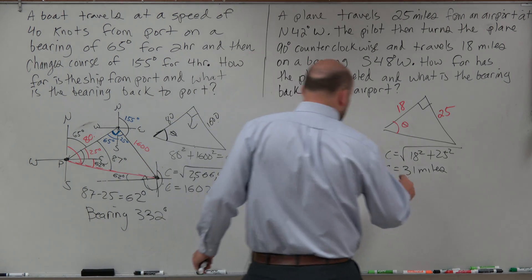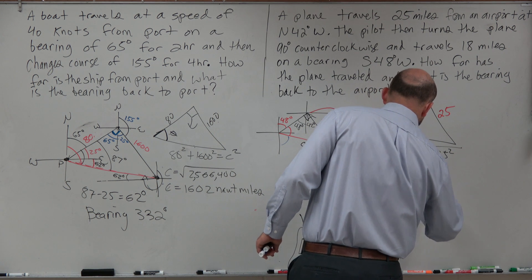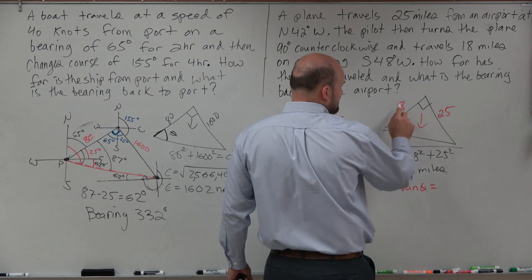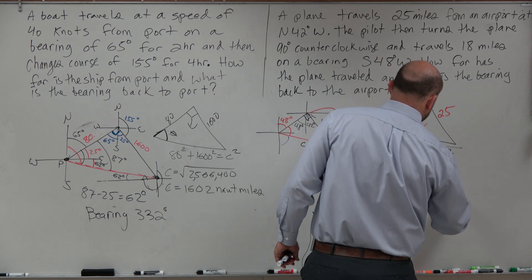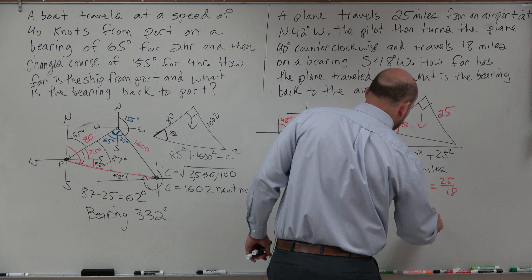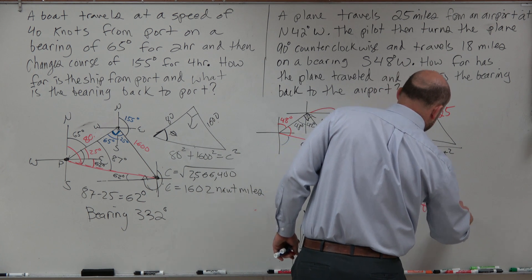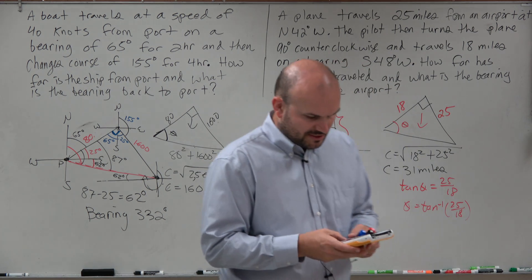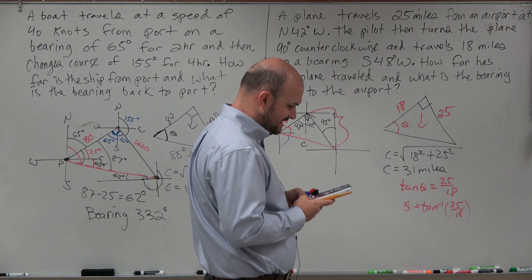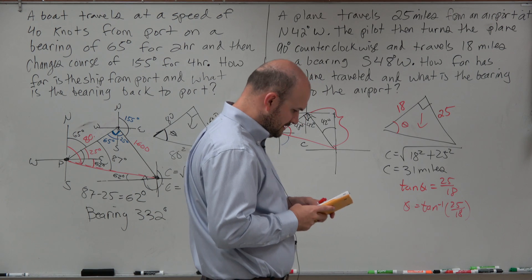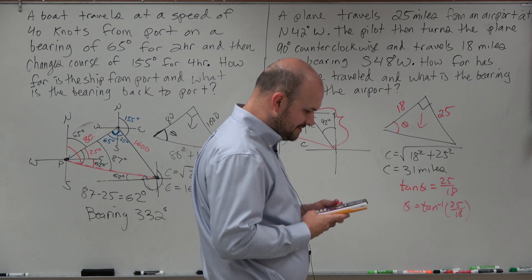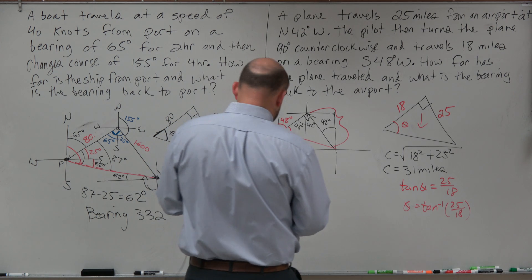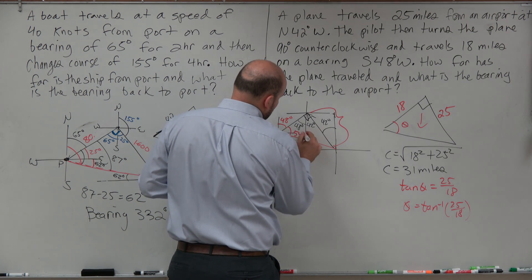The tangent of theta equals 25 over 18 — 25 is the opposite side and 18 is the adjacent side. So theta equals the inverse tangent of 25 over 18. Doing 25 divided by 18, then taking the inverse tangent, gives approximately 54 degrees. Rounding to the nearest degree, theta is 54 degrees.